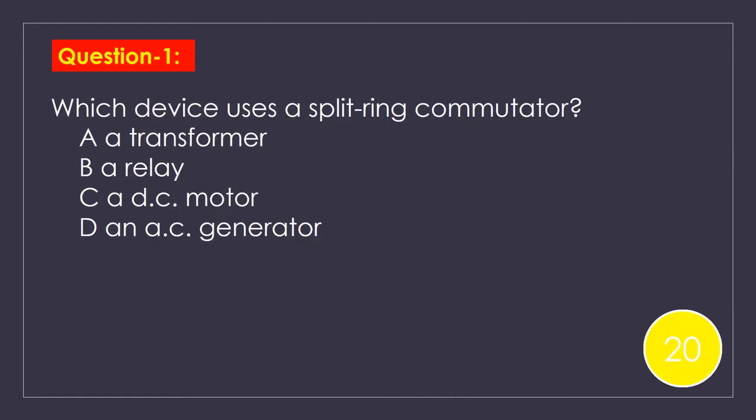Try this first question. Which device uses a split ring commutator? Option A, a transformer. Option B, a relay. Option C, a DC motor. Option D, an AC generator. Your time starts now. The correct answer is C, a DC motor. No need of looking at other devices.